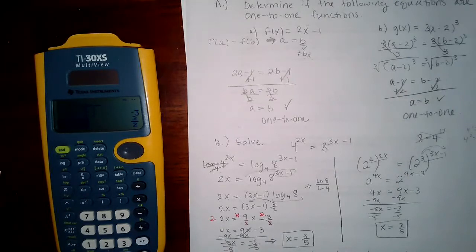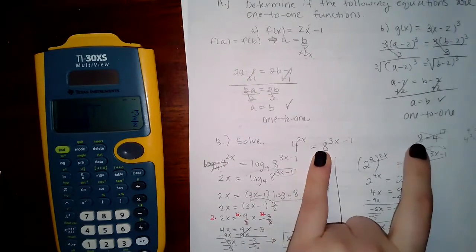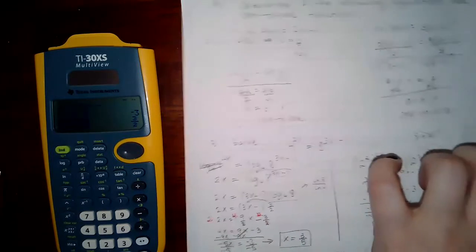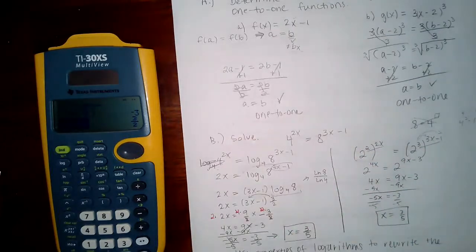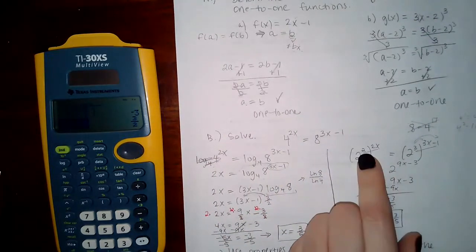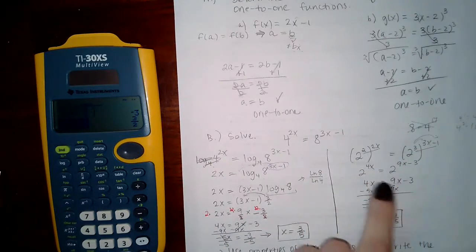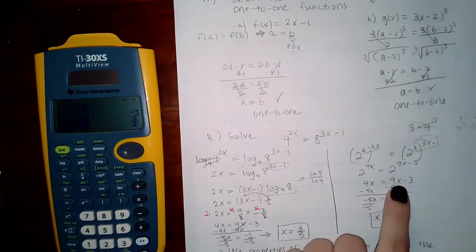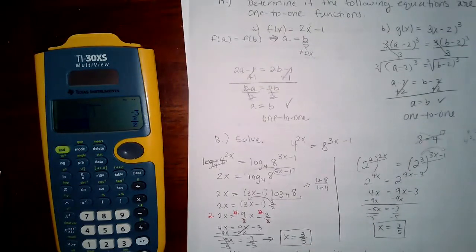In section 4.2, the approach is to get both sides to the same base. Since you can't write 8 as a power of 4 — because 4¹ = 4 and 4² = 16, skipping over 8 — you use the smaller base of 2. Writing 4 as 2² and 8 as 2³, then distributing the exponents, gives equivalent exponents on both sides. Setting those exponents equal: subtracting x from both sides gives −5x = −3, and dividing by −5 gives x = 3/5.